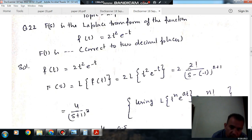This will be 2 times n factorial, so n is 2, so 2 factorial, divided by s minus minus 1, or s plus 1, to the power n plus 1. N is 2, so 2 plus 1 equals 3.